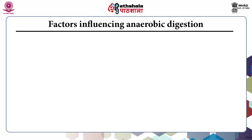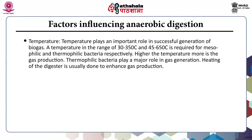Let us discuss the various factors that influence the anaerobic digestion process. The first is temperature, which plays an important role in successful biogas generation. A temperature of 30 to 35 degrees Celsius is required for mesophilic bacteria, and 45 to 65 degrees Celsius for thermophilic bacteria. Higher temperatures result in more gas production, and thermophilic bacteria generally play a major role in gas generation. Heating the digester will enhance gas production.